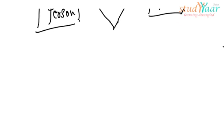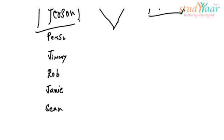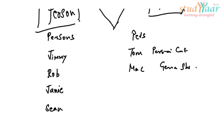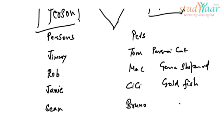Let's take an example. Say we have persons: Chimmy, Rob, Jamie, Sean, and Tom. And we have some pets: Tom which is a Persian cat, Mac which is a German Shepherd, CC which is a goldfish, and Bruno which is a Boxer dog.